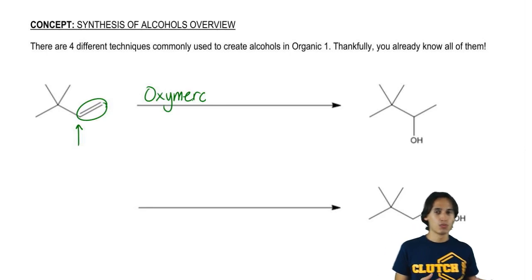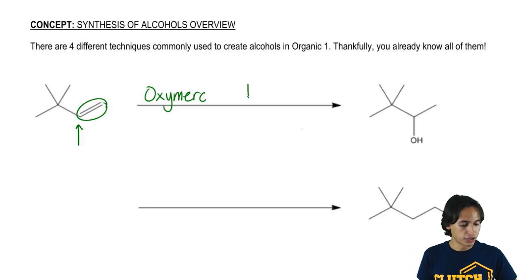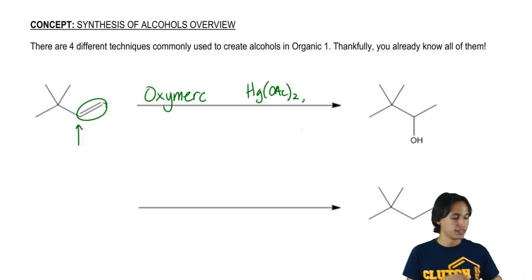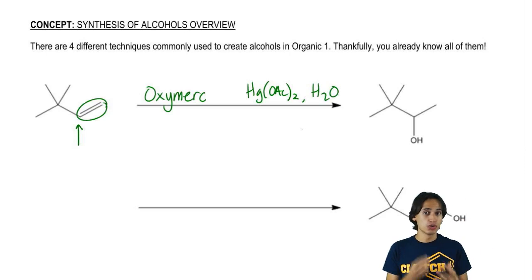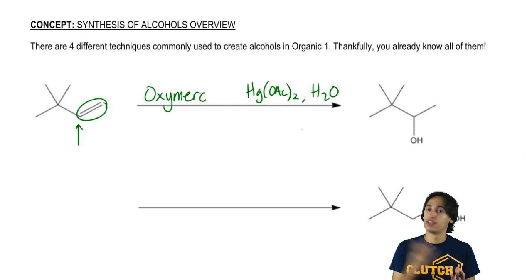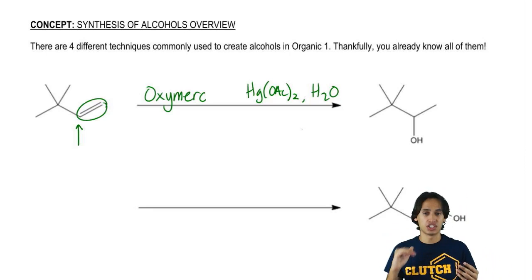So now all I have to do is fill in the reagents for oxymerc. Basically what we would have is some kind of mercury molecule, so it would be HgOAc2. And then what we would put with that is water, because we want to show specifically that we're using water to add the alcohol. On the bottom of the arrow, then we did the reduction step.